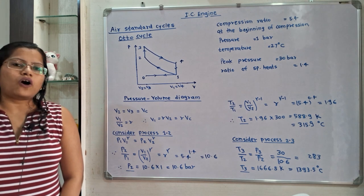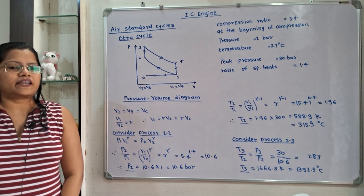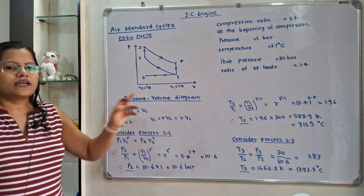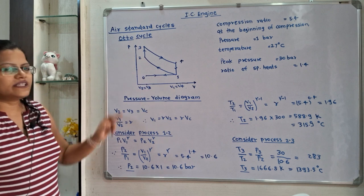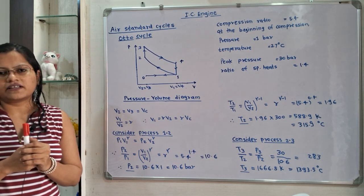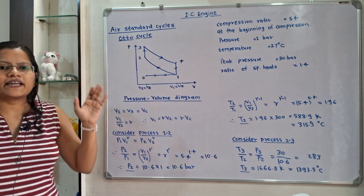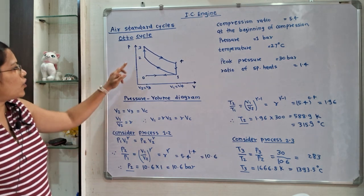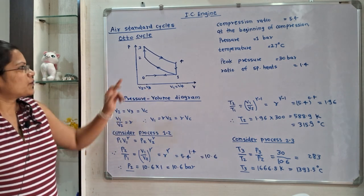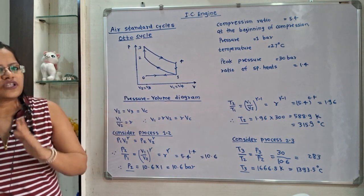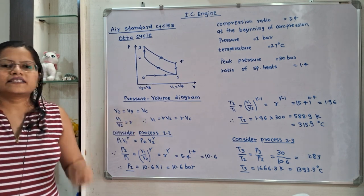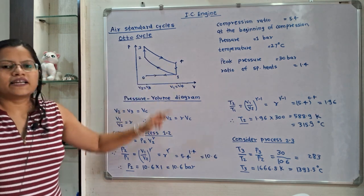The SI engine is working on an Otto cycle. Let us understand the given data with the help of a pressure-volume diagram of the Otto cycle. In the diagram, 0 to 1 is the suction process. Then 1 to 2 is the isentropic compression process where the medium is getting compressed in the piston-cylinder arrangement. Then 2 to 3 is the heat addition process at constant volume, where V2 equals V3 and heat is added. Process 3 to 4 is the isentropic expansion process where entropy remains constant, and 4 to 1 is the heat rejection process.